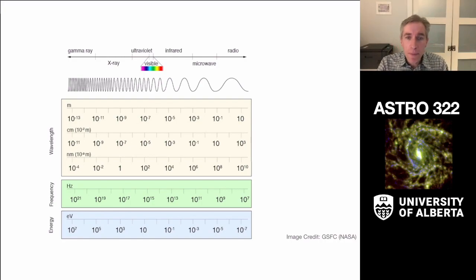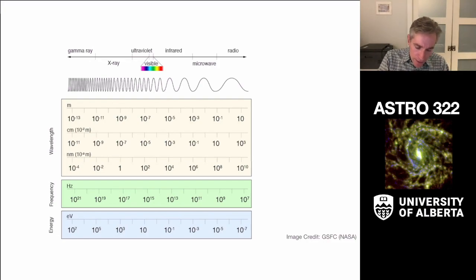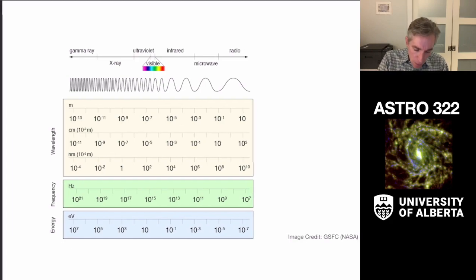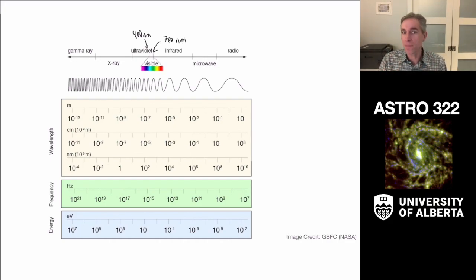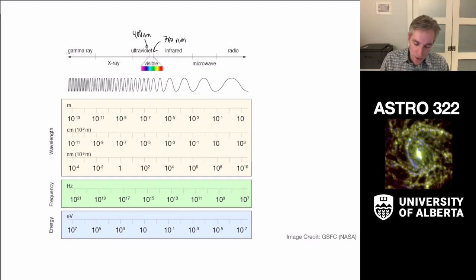The boundaries between wave bands are loose at best, with one exception: visible light. That is set by our biology, and the visible wave band runs from about 400 nanometers on the short wavelength end to 700 nanometers on the long wavelength end. We often observe into the ultraviolet and infrared as well.